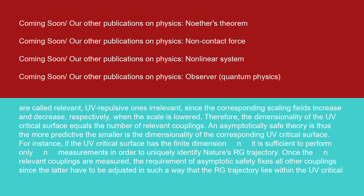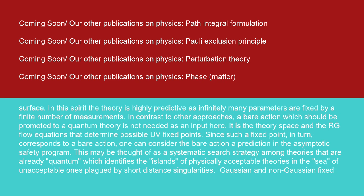Therefore, the dimensionality of the UV critical surface equals the number of relevant couplings. An asymptotically safe theory is thus the more predictive the smaller is the dimensionality of the corresponding UV critical surface. For instance, if the UV critical surface has the finite dimension N, it is sufficient to perform only N measurements in order to uniquely identify nature's RG trajectory. Once the N relevant couplings are measured, the requirement of asymptotic safety fixes all other couplings since the latter have to be adjusted in such a way that the RG trajectory lies within the UV critical surface. In this spirit, the theory is highly predictive as infinitely many parameters are fixed by a finite number of measurements. In contrast to other approaches, a bare action which should be promoted to a quantum theory is not needed as an input here. It is the theory space and the RG flow equations that determine possible UV fixed points. Since such a fixed point, in turn, corresponds to a bare action, one can consider the bare action a prediction in the asymptotic safety program. This may be thought of as a systematic search strategy among theories that are already quantum, which identifies the islands of physically acceptable theories in the sea of unacceptable ones plagued by short-distance singularities.